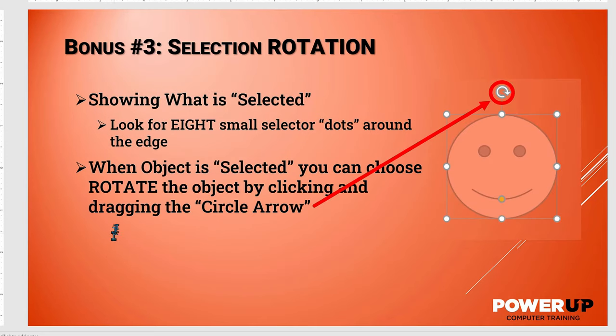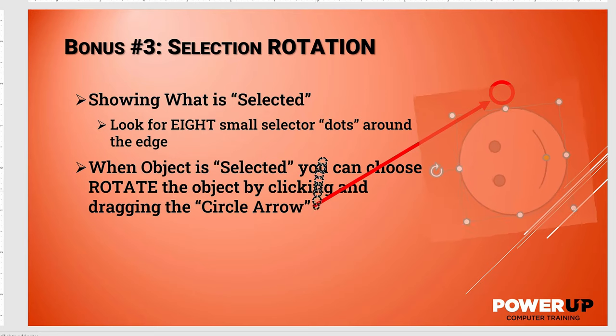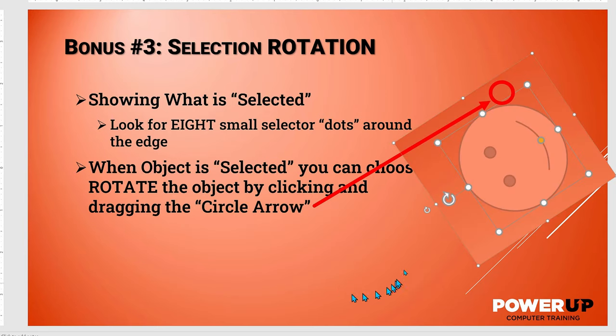Image rotation: when an object is selected, there is a ninth indicator beyond the eight edge dots. This circular arrow can be used to rotate the selected object. Just click and spin it like the hands of a clock.